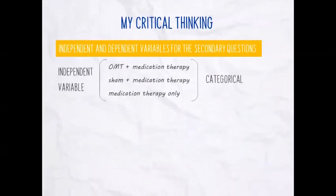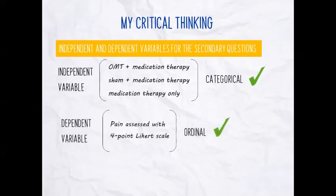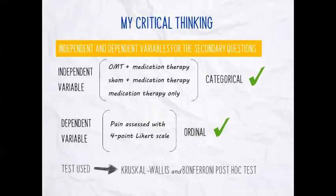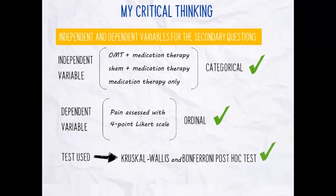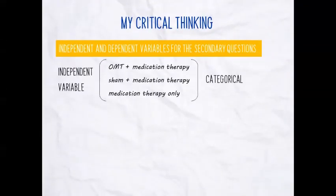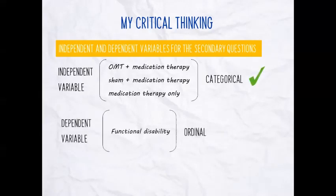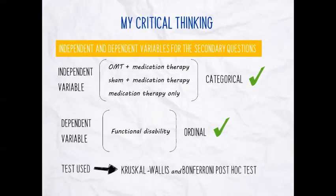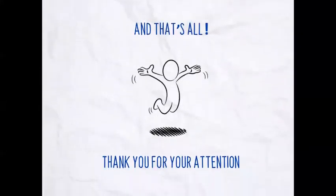The other secondary question was pain assessed with the four-point Likert scale — our dependent variable — while the independent variable is again categorical. Since the dependent variable is ordinal, they used the non-parametric test Kruskal-Wallis followed by the Bonferroni post hoc test. Similarly, for functional disability — also ordinal — they again used Kruskal-Wallis followed by the Bonferroni post hoc test. With these decisions I completely agree, because they followed all the assumptions. So here's my analysis of the statistical part of this article. I hope you enjoyed it, and thank you for your attention.